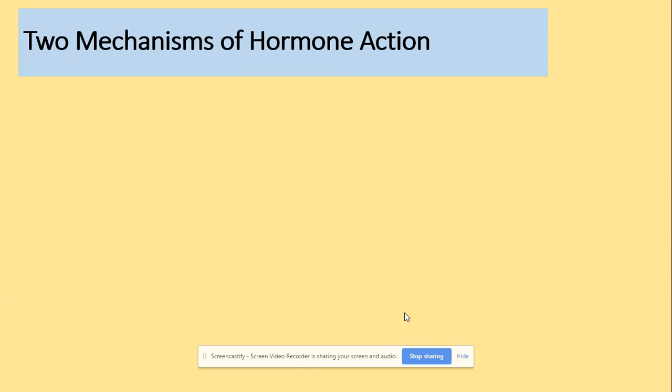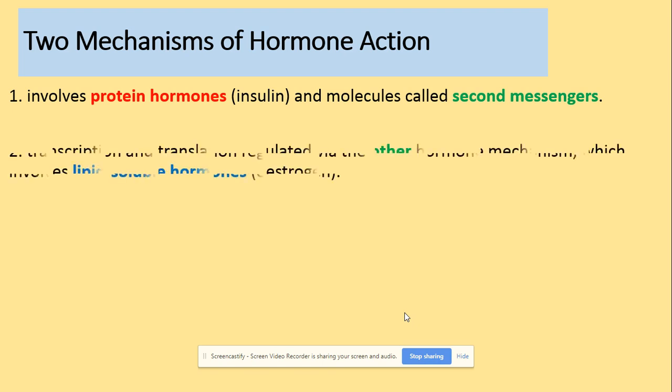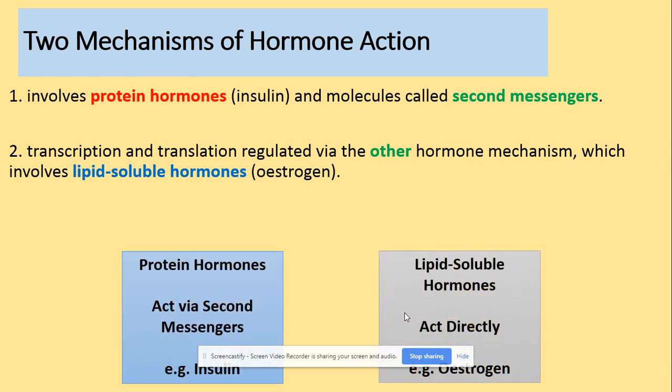One action we will look at is the second messenger, which you have already learned about in Section 6 — that was related to regulation of blood glucose concentration and involves a protein hormone. The new content today is the regulation of transcription and translation by estrogen. Estrogen is a lipid-soluble hormone, which is important: unlike the second messenger, it will act directly on gene expression.